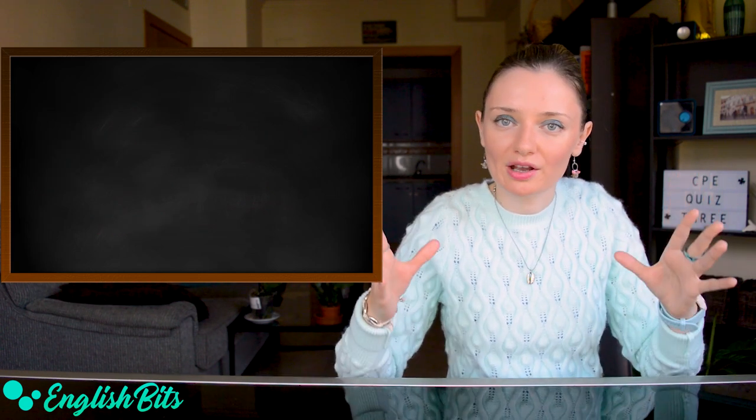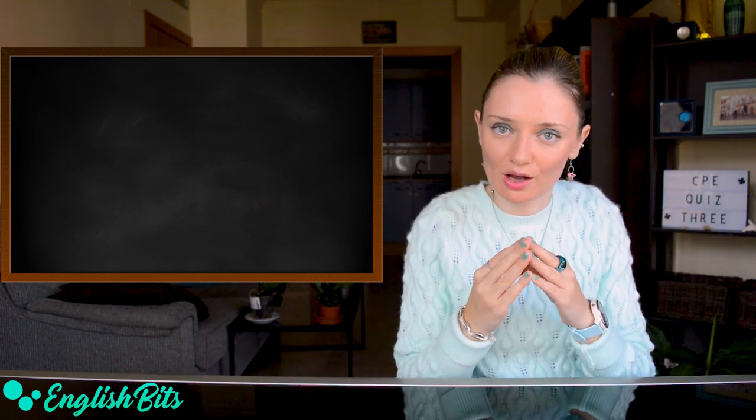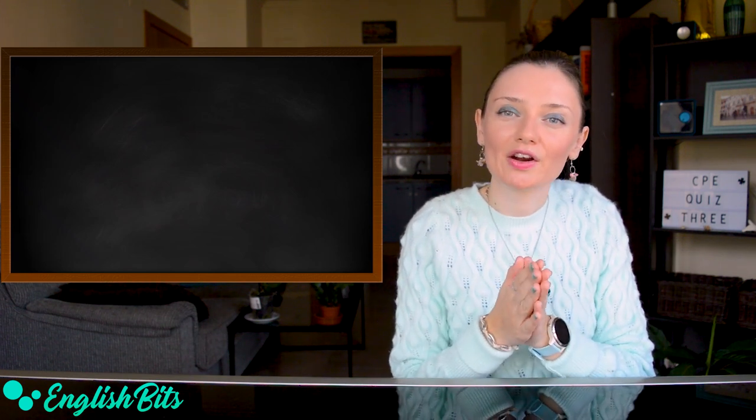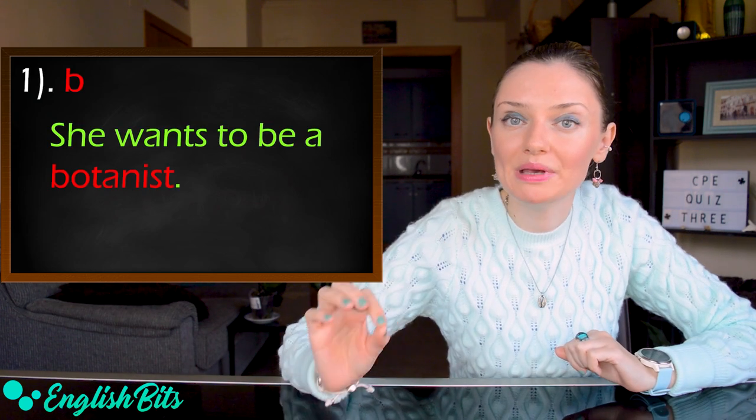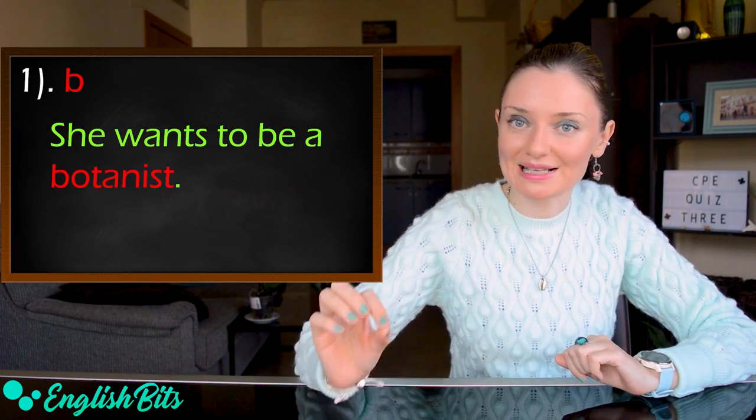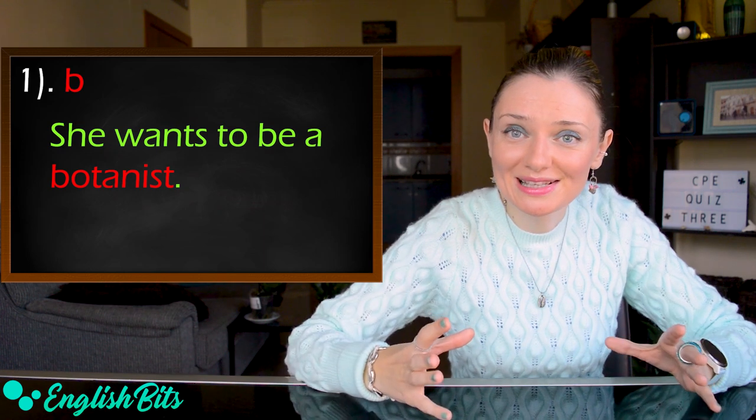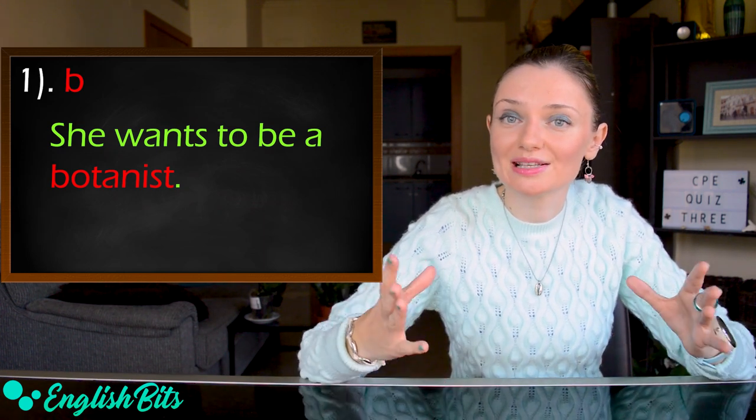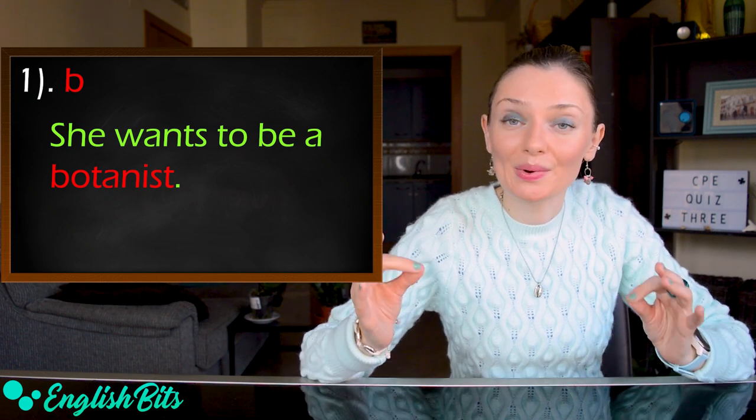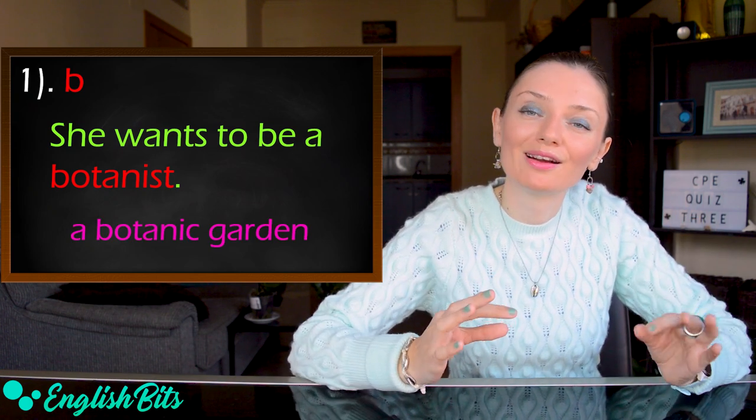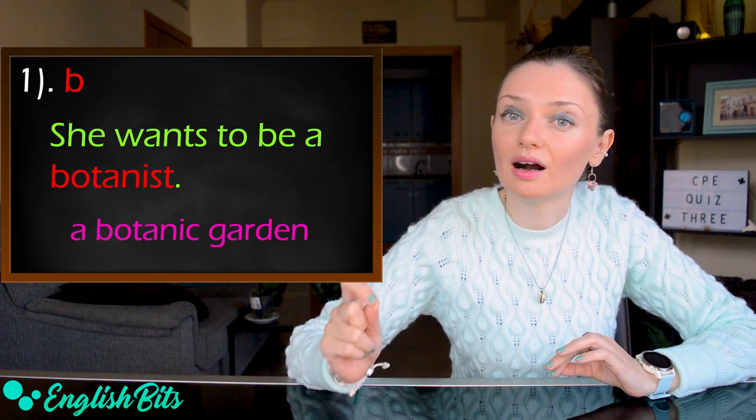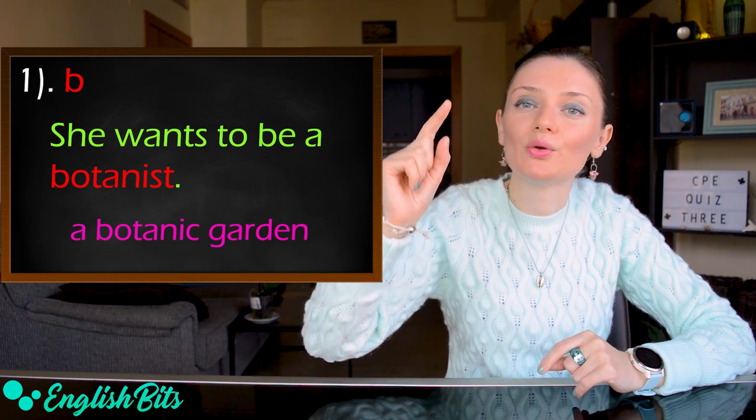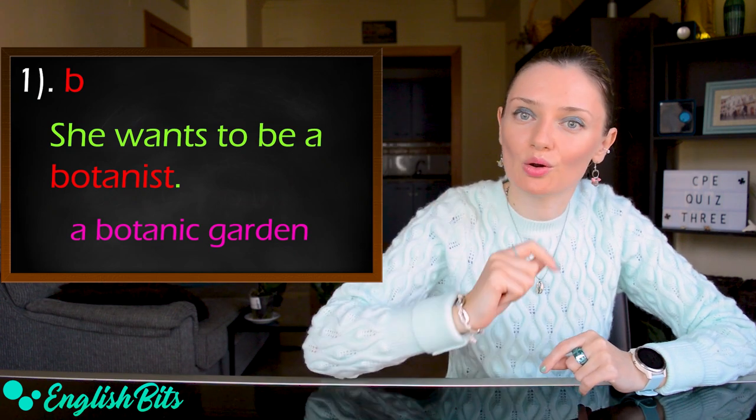Now we're going to check your answers and find out your score. The first sentence, the correct option is B. She wants to be a botanist. Botanist is a job and it's a person who studies plants. But we can use botanic with garden, a botanic garden. So if you have B, you can tick and you get one point.